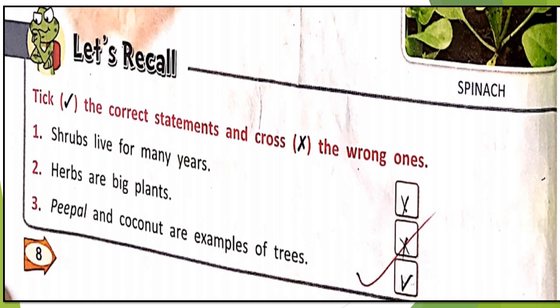Number two: herbs are big plants. No, herbs are small plants, so this statement is wrong. Number three: peepal and coconut are examples of trees — yes, that is correct, so you have to tick it.